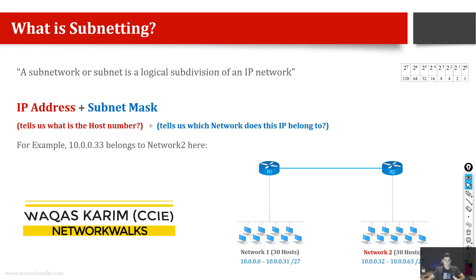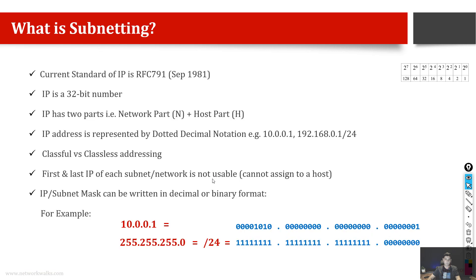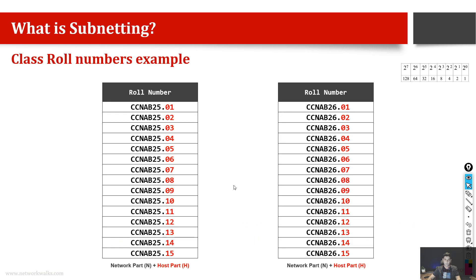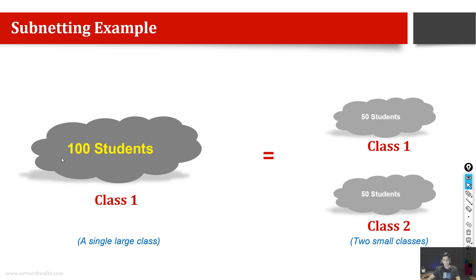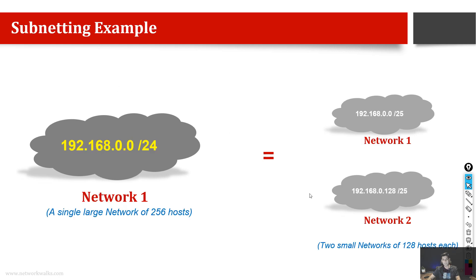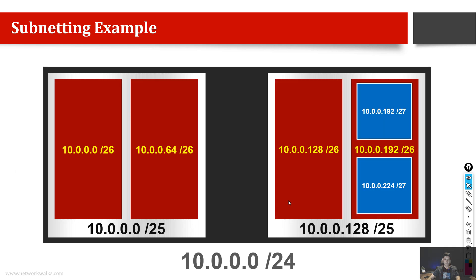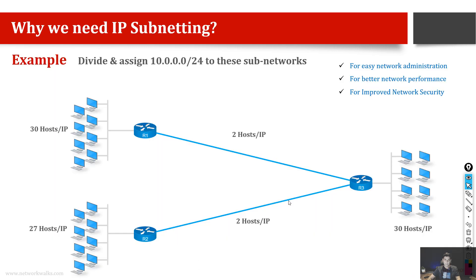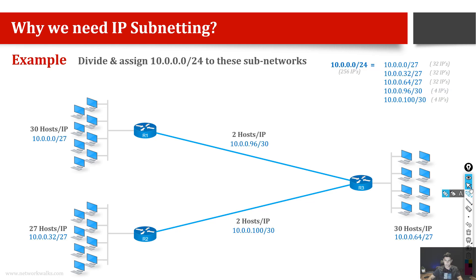We will study what is an IP address, how it is different from the MAC address, and why we need a subnet mask if we already have an IP address. We will see with practical examples how we can divide a big class or big subnet into smaller subnetworks, and why we need IP subnetting.